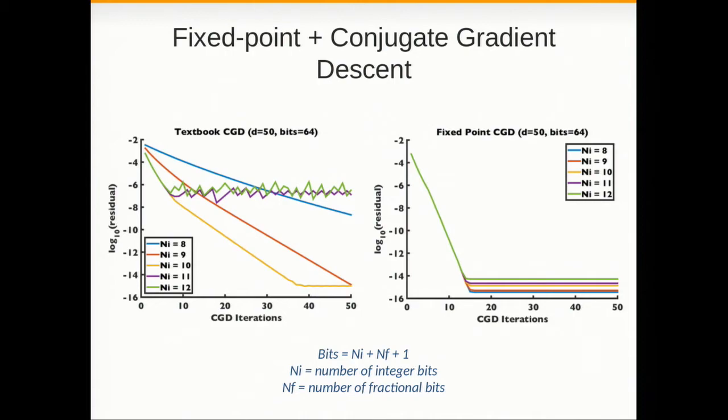So in our paper we show how to fix that and propose a fixed point CGD, a version of CGD that recovers these good convergence properties and is as accurate as a floating point implementation. But of course faster in MPC.